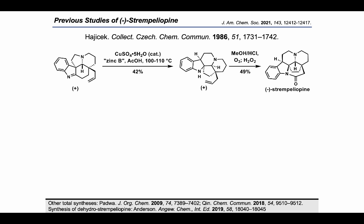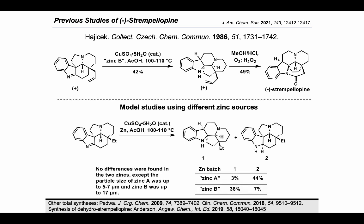This compound was then taken on to strempeliapine via an ozonolysis reaction with an oxidative workup using hydrogen peroxide, which resulted in the formation of strempeliapine in 49% yield. Interestingly, the group noted that the zinc batch which they labeled as zinc B was solely effective in bringing about this rearrangement.